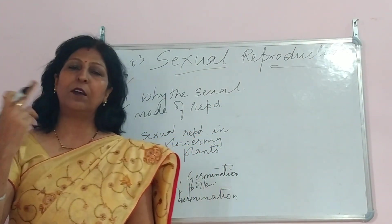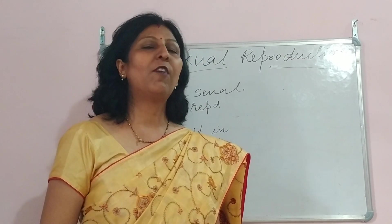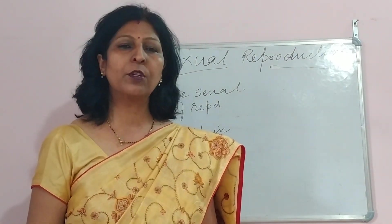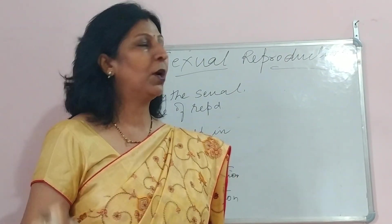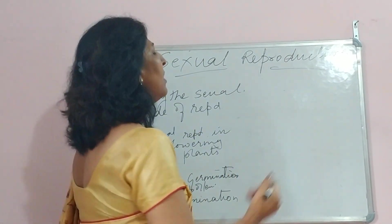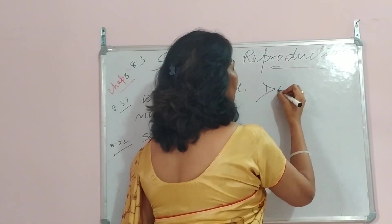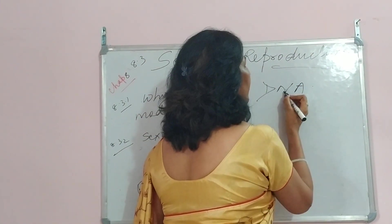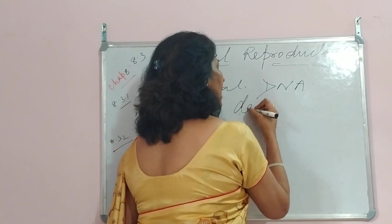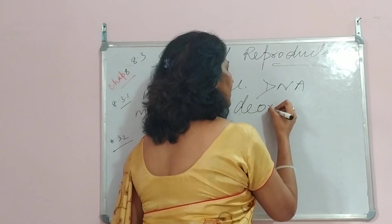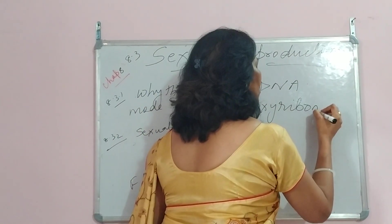Now children, in the very introduction, I told you why sexual reproduction, and we also talked about mitosis and meiosis. Here I talked about DNA. I hope you know that the full form of DNA is deoxyribonucleic acid.